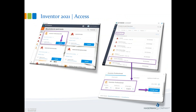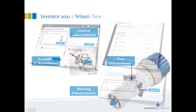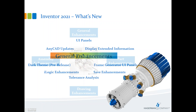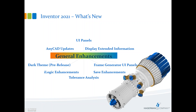Inventor 2021 can be accessed two ways: via the Autodesk desktop app installed locally, or via the Autodesk accounts web page. Any release of any Autodesk software you're assigned is available through both. The 2021 updates are broken into four areas: general enhancements, drawing, assembly, and part enhancements. On the general side we have new UI panels, save enhancements, AnyCAD updates, tolerance analysis accessibility, and the return of the dark theme.